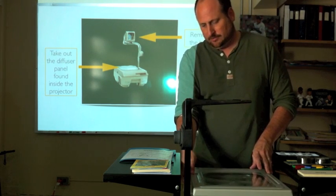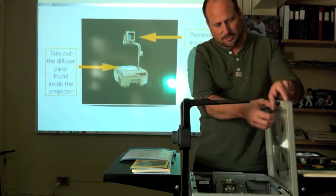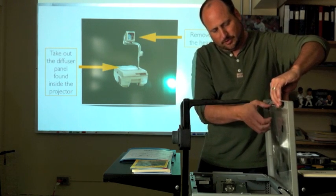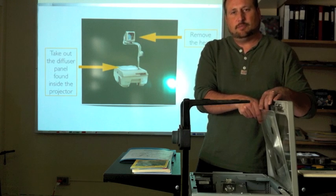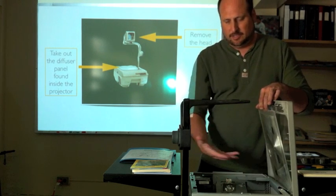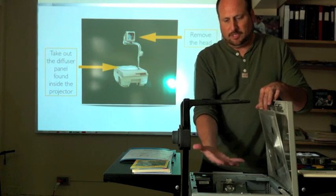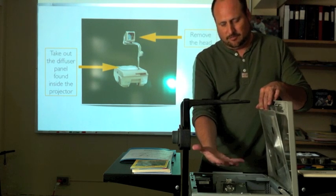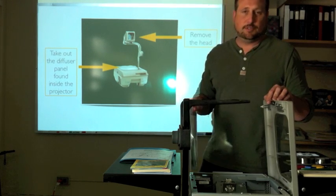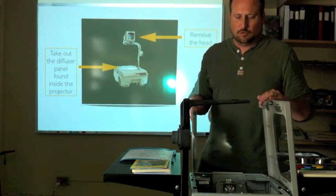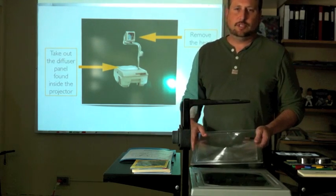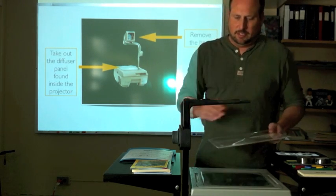The diffuser panel actually comes from inside the overhead itself. Right here in every overhead is a diffuser panel. It's what makes the beam of light get to be big and white and full so that it can work an overhead projector. But in our case, we're not using this anymore to project from. We're only using it to make it into a stand so that we can use the iPad to project.